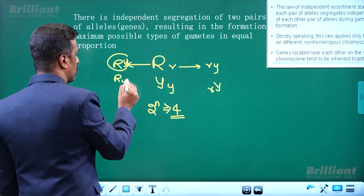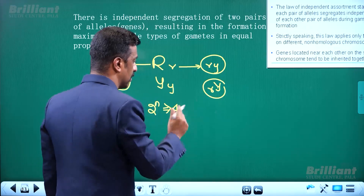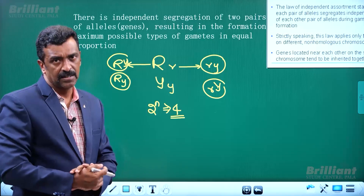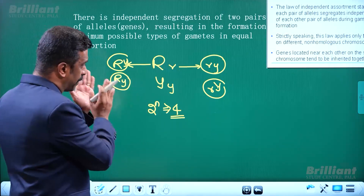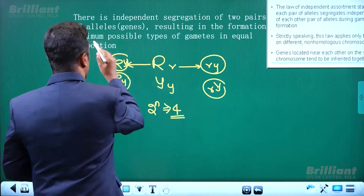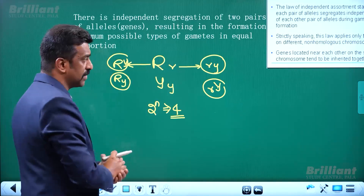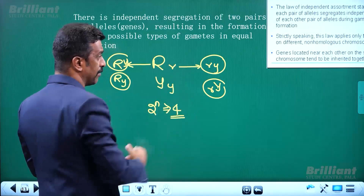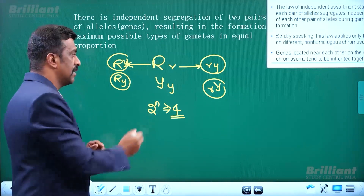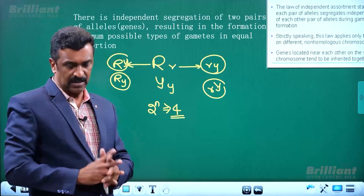The first pair has a different type of genotype, resulting in the formation of the maximum possible type of gamete in equal proportion. Four gametes or more — in equal proportion — that is the two genes connected to this maximum type.